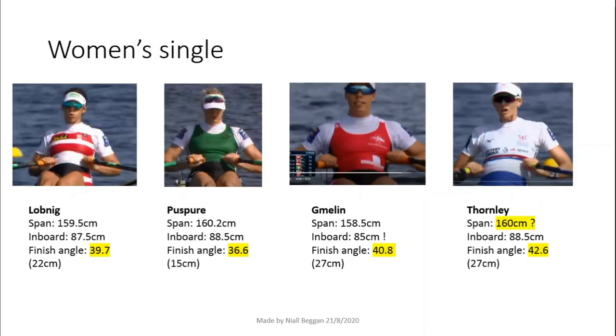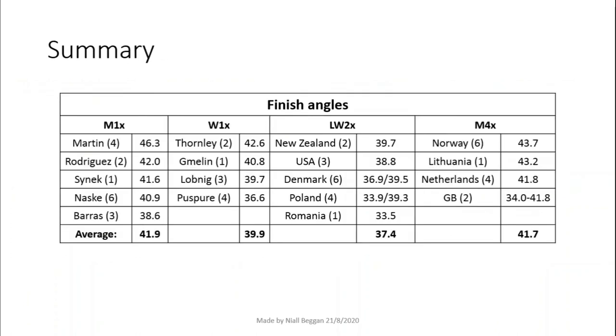Finally, the women's singles. Important to note here that I guessed Thornley's span because it wasn't included in the rigging survey. All scullers have pretty standard rigging numbers, except for Gmelin, who has a tiny inboard. This is probably because she is very short and wanted to make her arc longer. Here is a table summarizing the results.